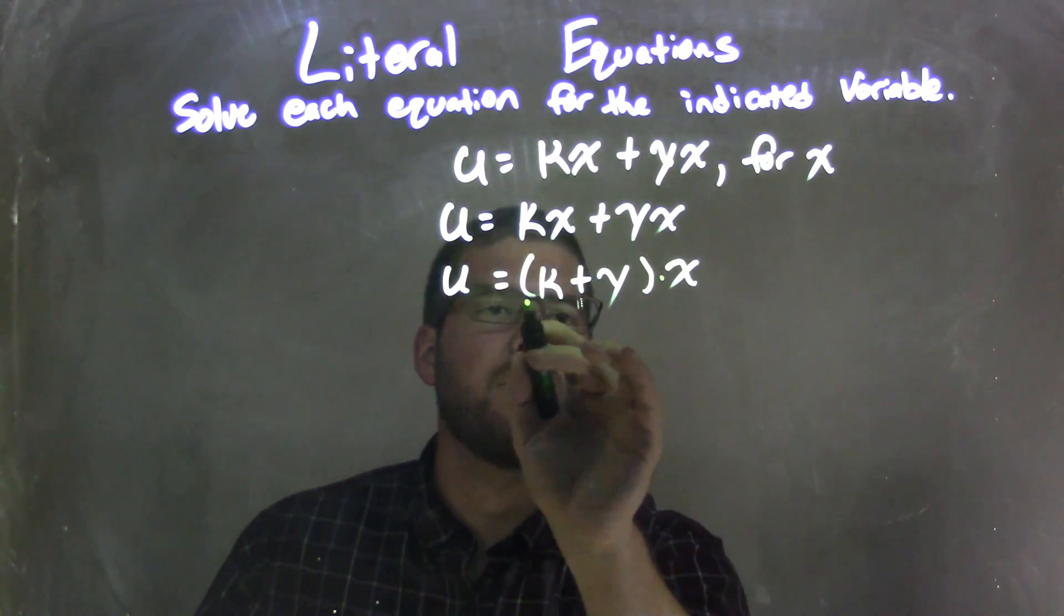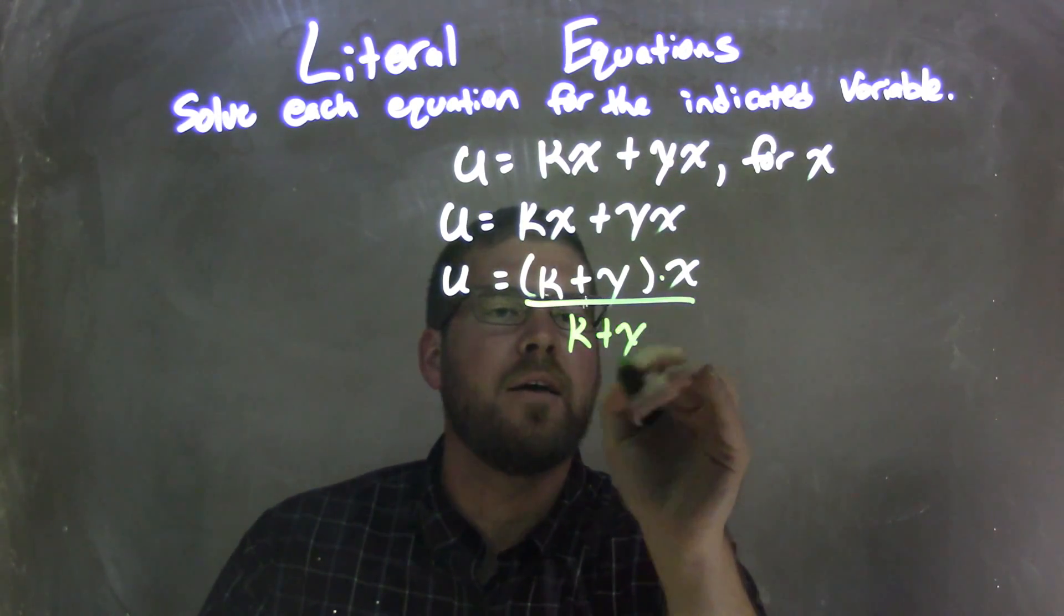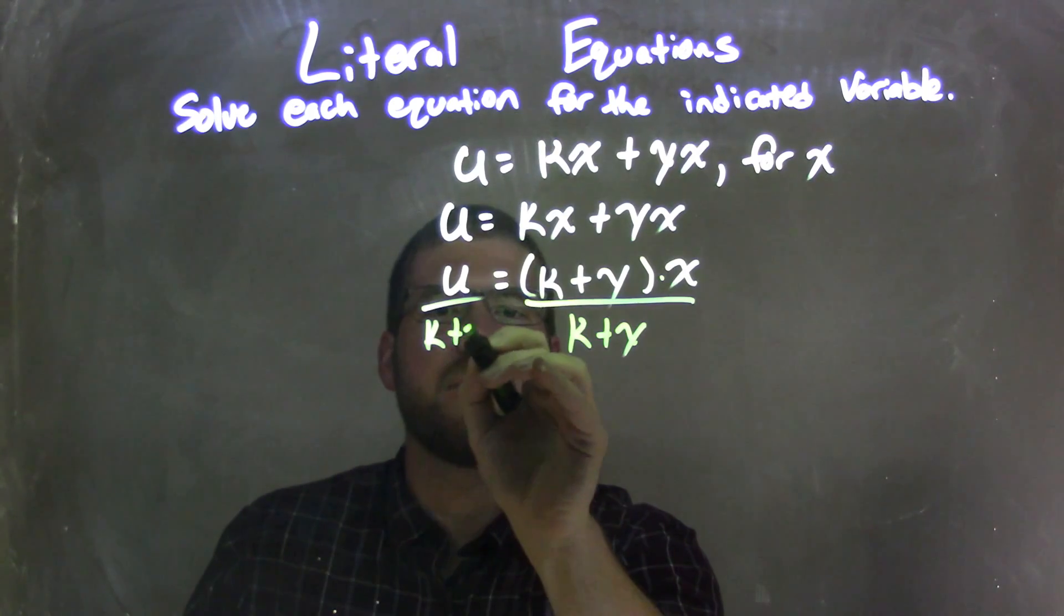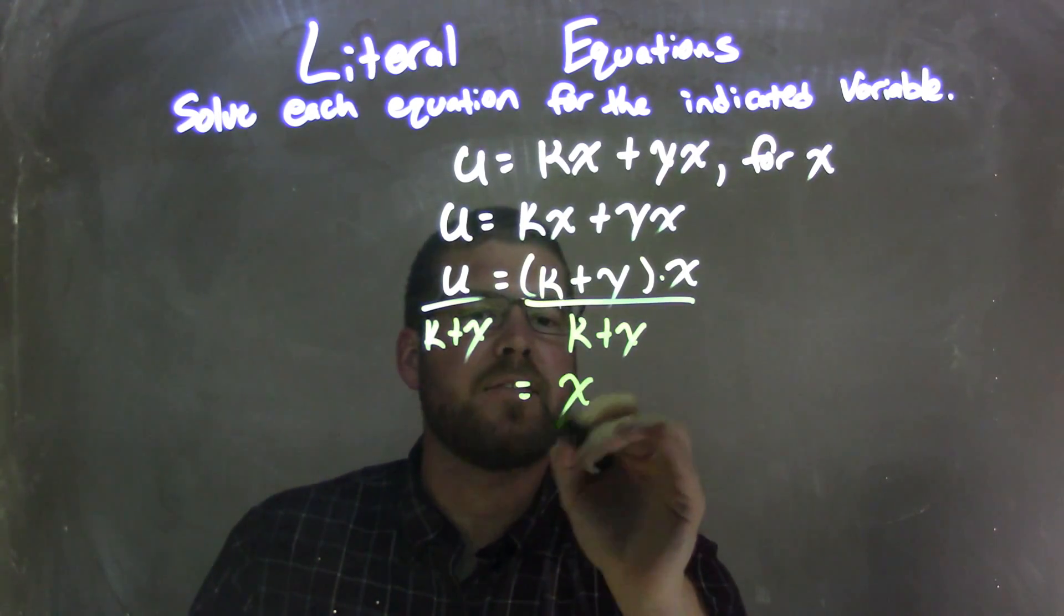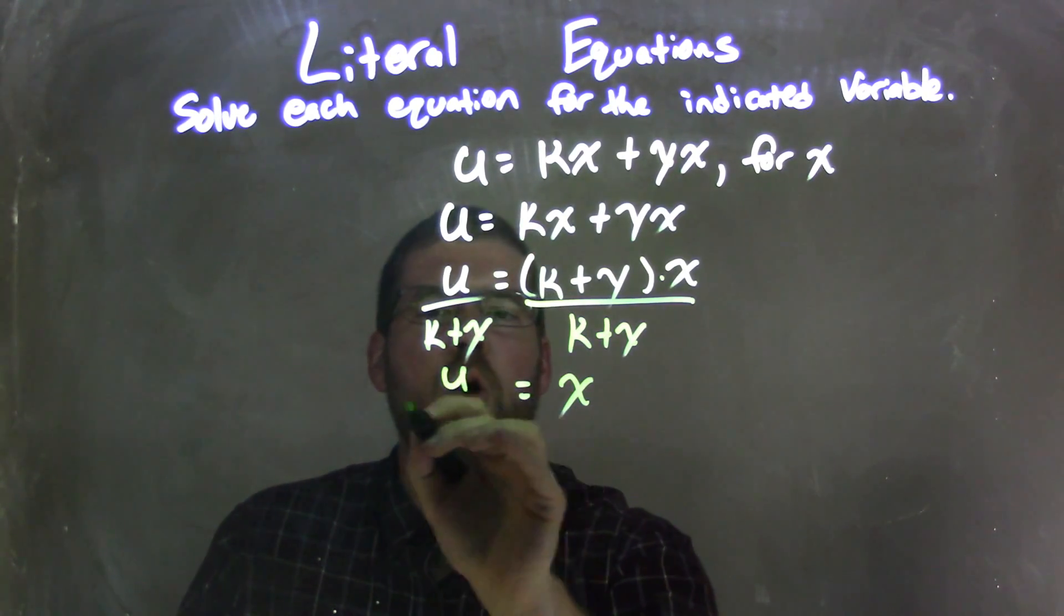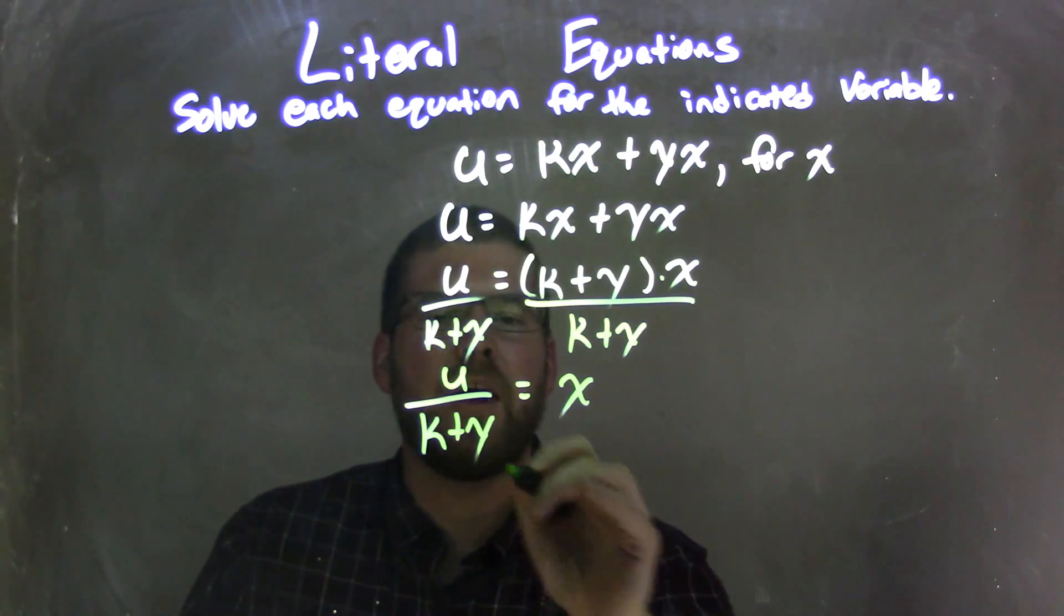Opposite of multiplication is division, so I'm going to divide by k plus y to both sides. That leaves me with x by itself on the right and u over k plus y on the left.